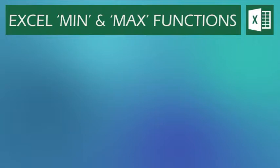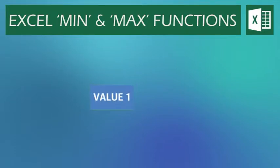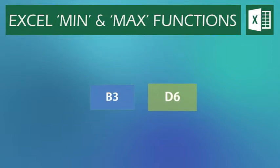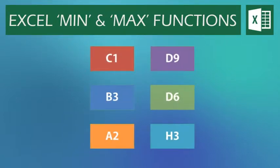Hi everyone. In this video we're going to be looking at the MIN and MAX functions in Microsoft Excel. The MIN and MAX functions are used to show the lowest and highest number from a set of given values. These values can be numbers or they can be cells. You can have as many numbers or cells as you need in order to complete your MIN or MAX function.